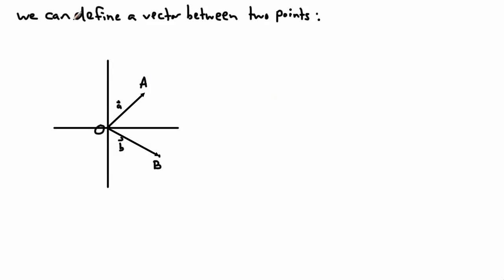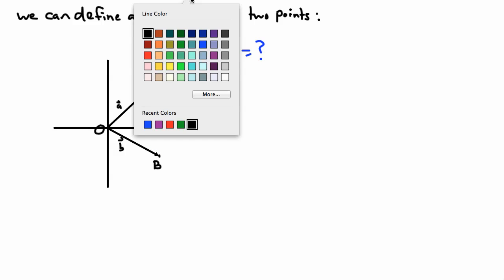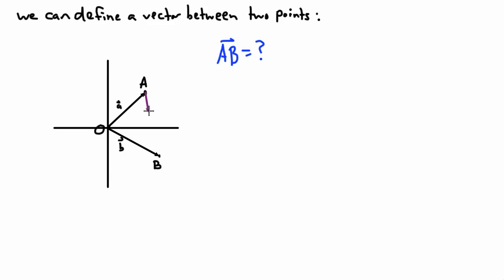Now, can we define a vector between two points? Of course. I have vector a going from O to point A, and vector b going from O to point B. I want to find the vector AB — going from A to B. Geometrically it's a straight line, but I want to express it in terms of a and b so I can work with it mathematically.